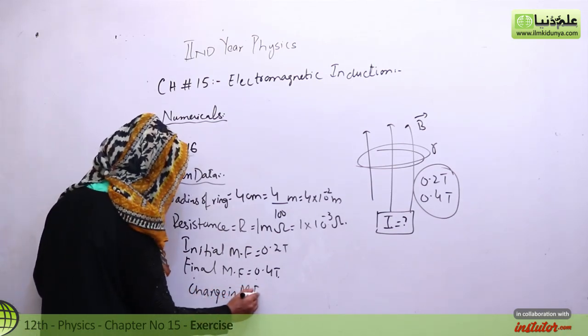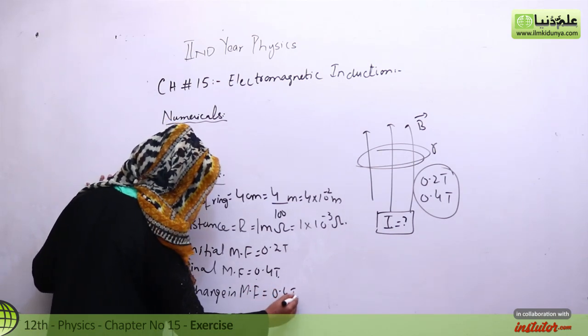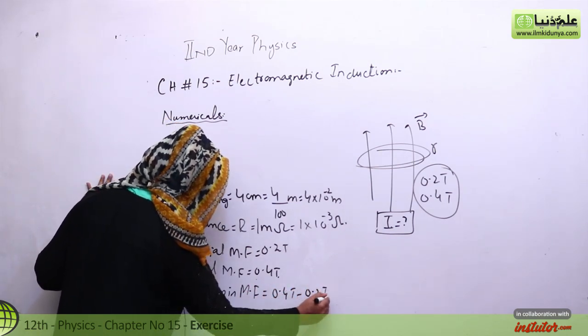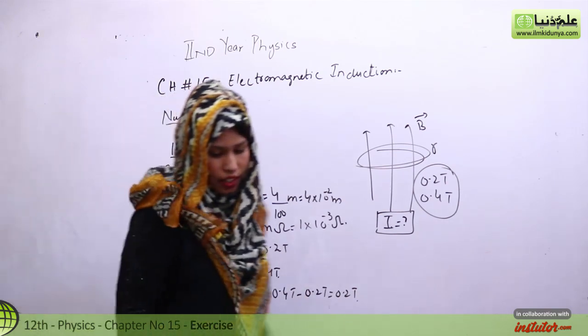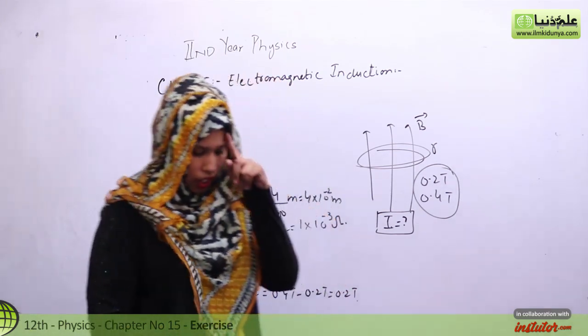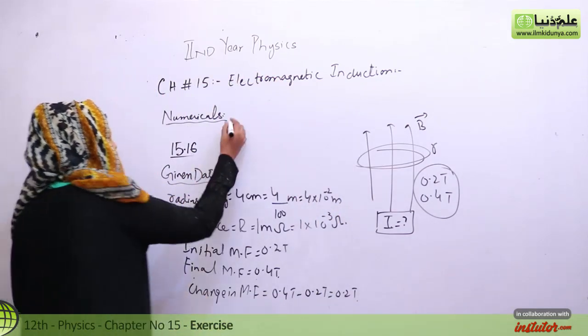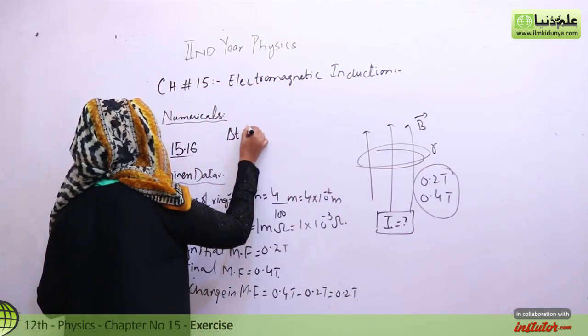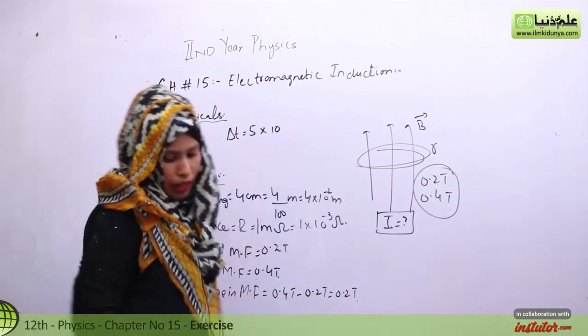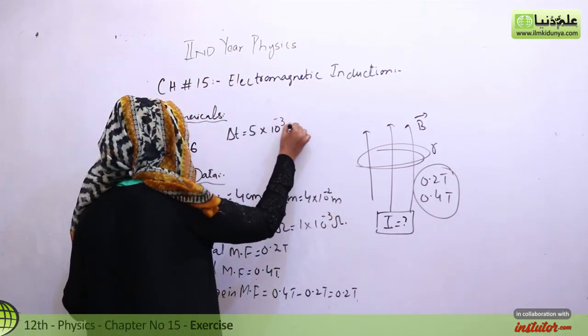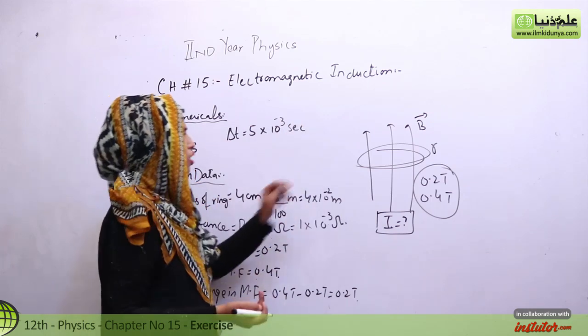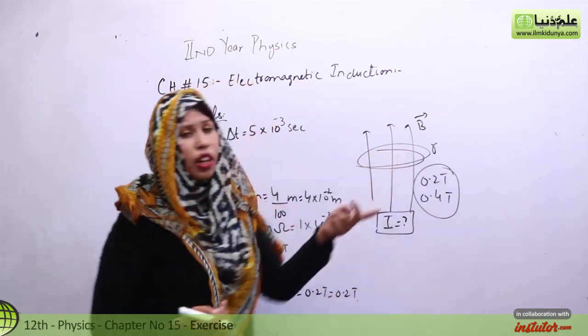We will find the change in magnetic field because it will be required in the formula. So 0.4 tesla minus 0.2 tesla equals 0.2 tesla. The last information given is the time interval, which is 5 times 10 to the power minus 3 seconds.